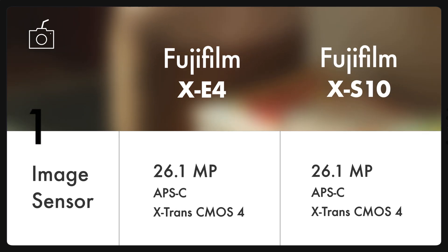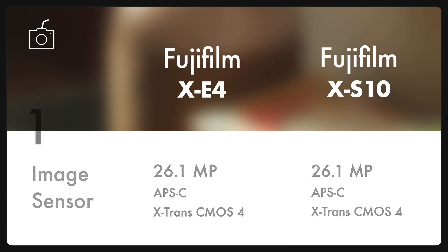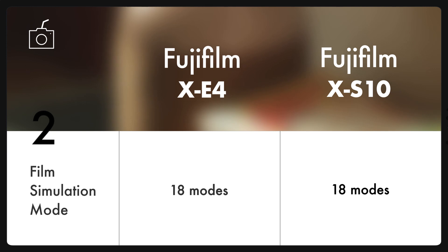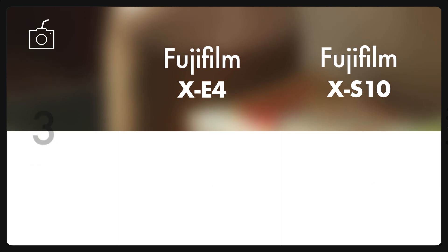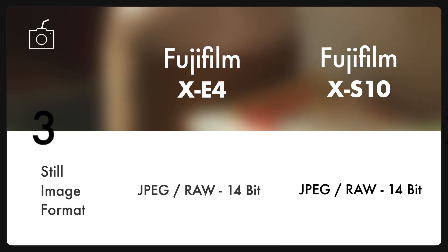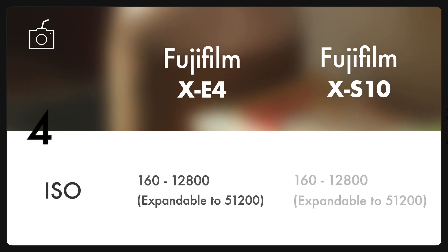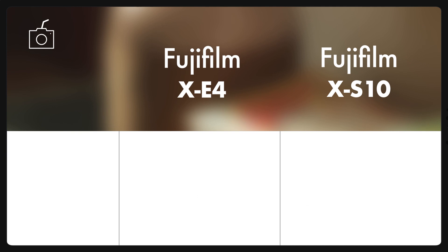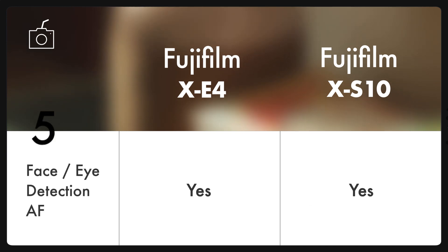Both cameras have the same 26.1 megapixel APS-C image sensor, which delivers sharp and good quality images. Both cameras also have 18 film simulations to choose from, which is one of the best aspects of Fujifilm. They output both JPEG and RAW file formats, and both share the same ISO range of 160 to 12800, expandable to 51200, giving good low light performance.